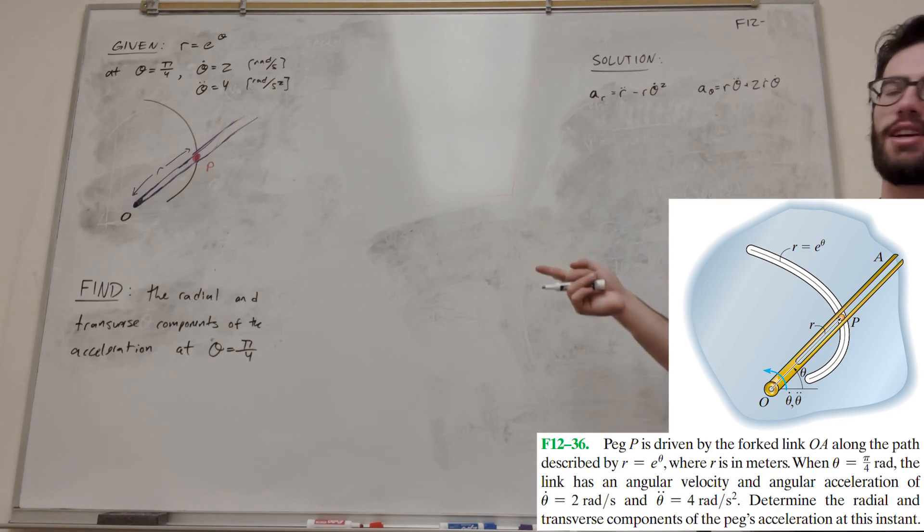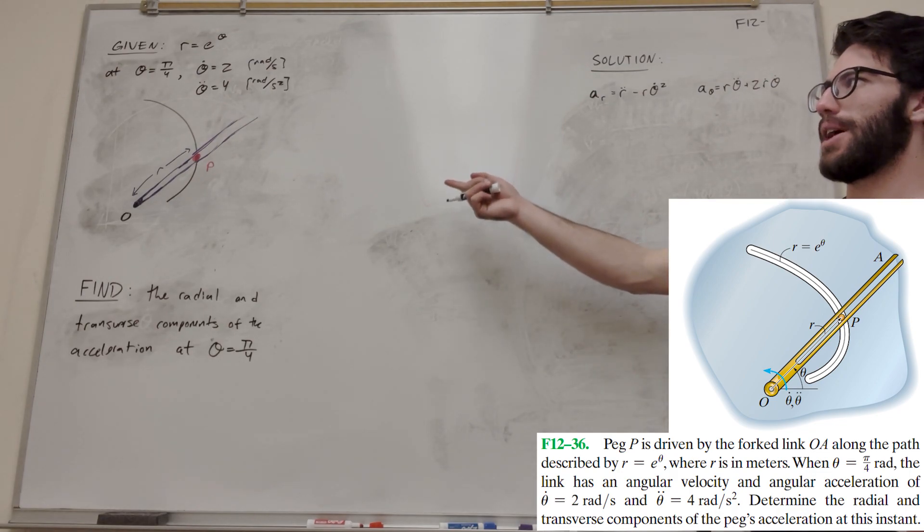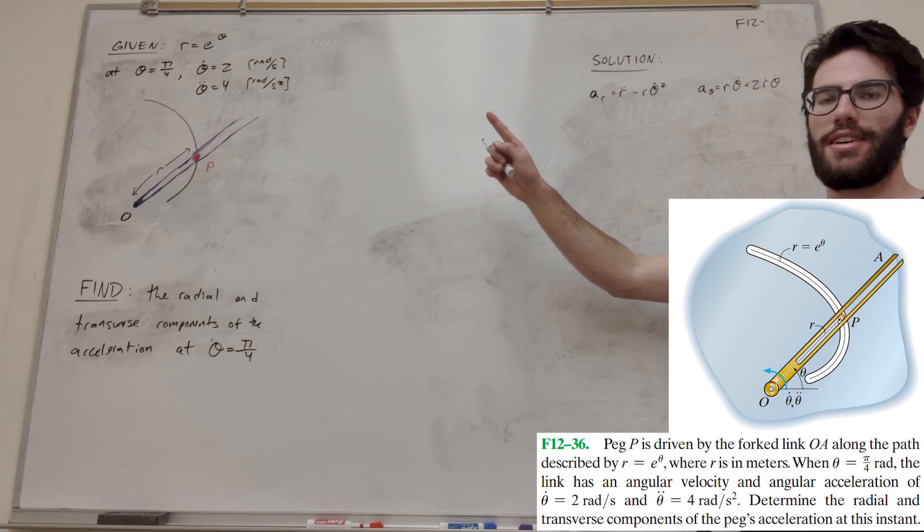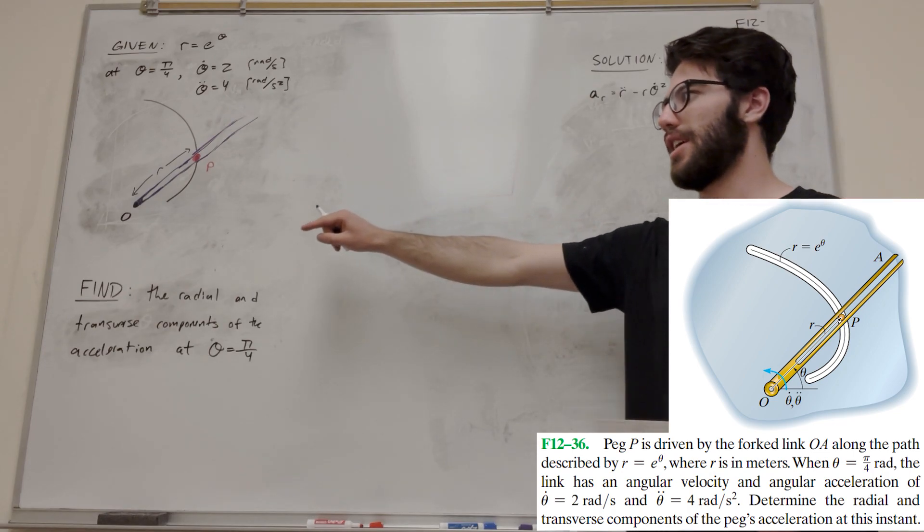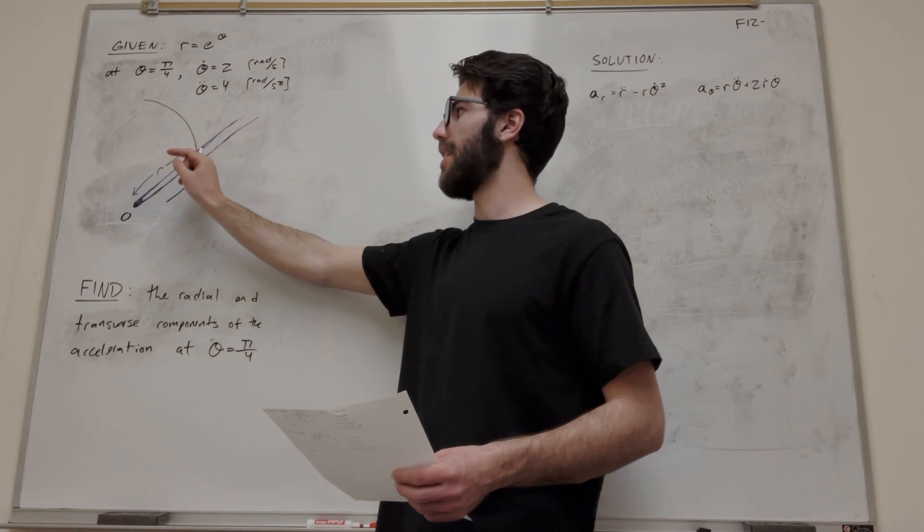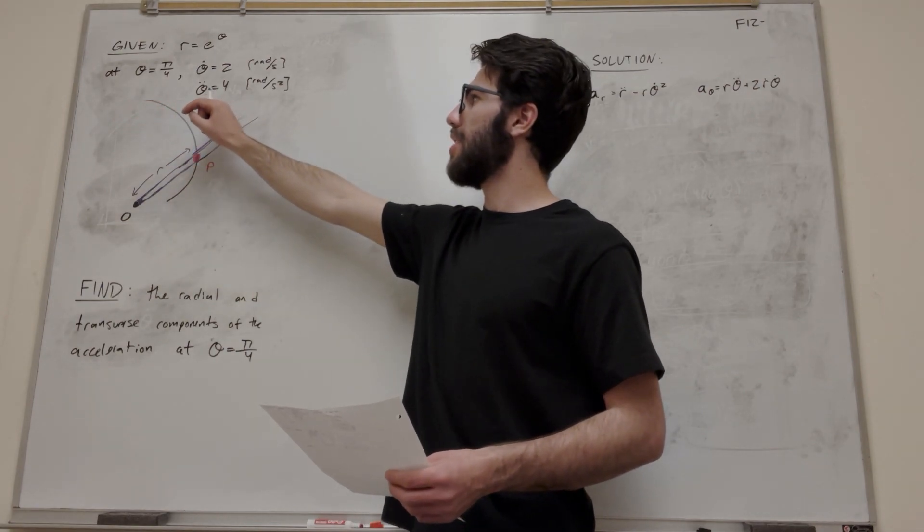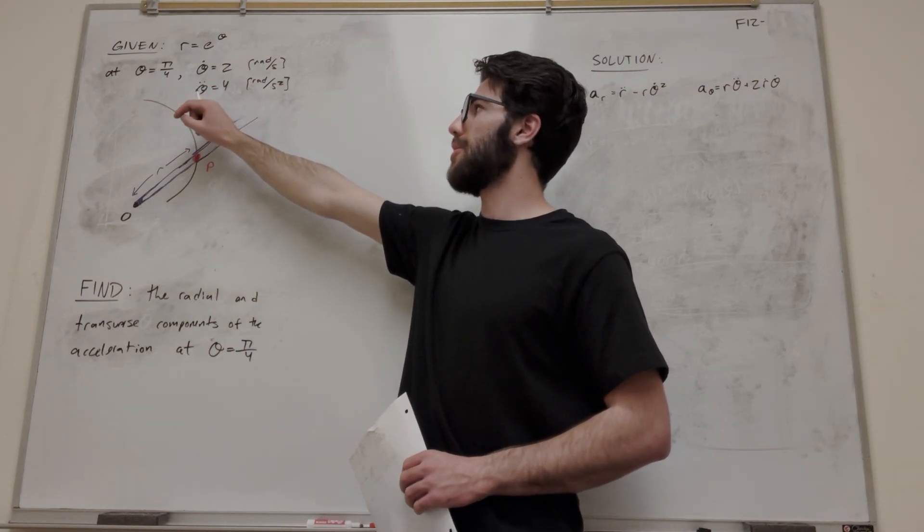So we have a peg at P, and it's traveling along this path given by r equals e to the theta. And then there's this holder at O that follows it. So we're given a couple things. At theta equals pi over 4...